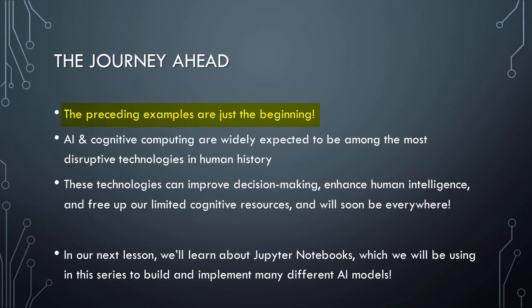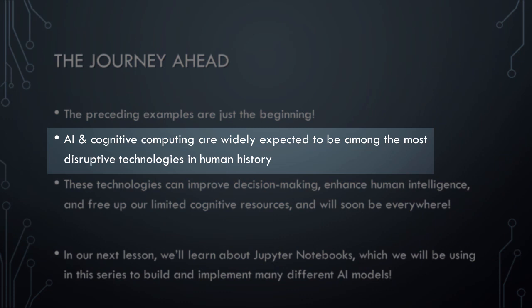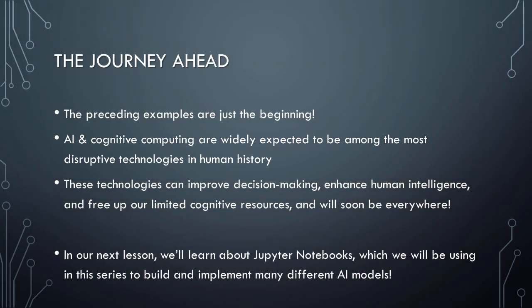The preceding examples are just the beginning. There are countless other ways in which AI and cognitive computing will change our lives in the coming years, many of which have not yet even been conceived. If you imagine what the world will be like when all of these things have become reality, then you'll understand why AI and cognitive computing are widely expected to be among the most disruptive technologies in all of human history. They can improve decision-making, enhance human intelligence, and free up our limited cognitive resources so that we are able to focus on other tasks. Cognitive machines and AI will become so ubiquitous and so seamlessly integrated into everything we do that, like smartphones, the internet, or electricity, we will soon wonder how people ever survived without them.